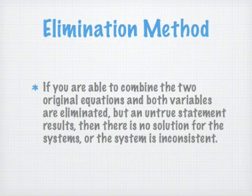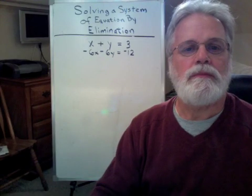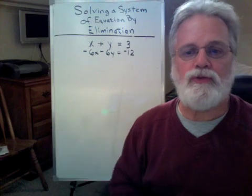Here's a tip. If you are able to combine two original equations and both variables are eliminated, but an untrue statement results, there is no solution for the system. That means the system is inconsistent. Here's a demonstration of that tip.